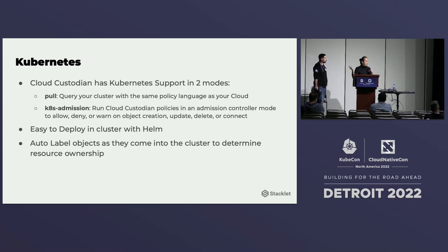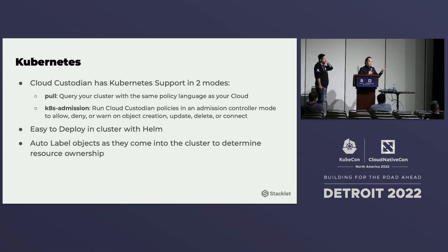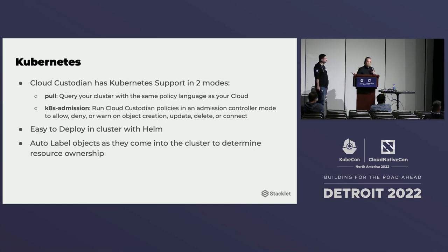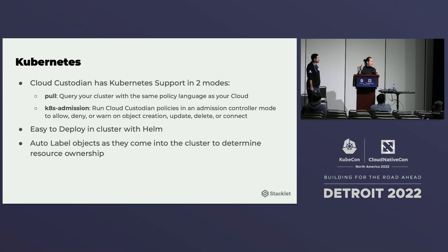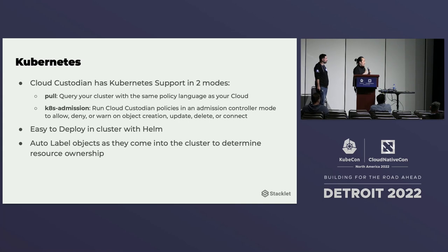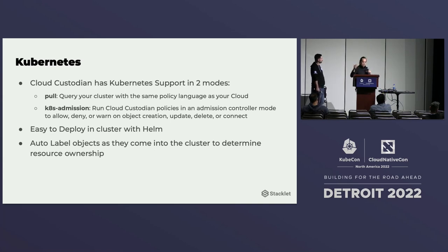What does this have to do with KubeCon? Custodian now has support for Kubernetes. One mode is the pull mode I mentioned — just look at your cluster and run a filter on it. The other mode is the Kubernetes admission mode — an admission controller you can deploy into or outside your cluster using a mutating webhook configuration that can allow or deny objects based on filters you've defined. It's easy to deploy with a Helm chart, and you can do things like auto-label objects as they come in.